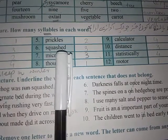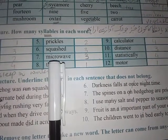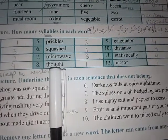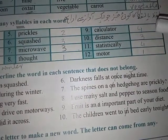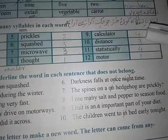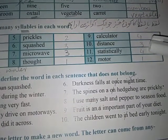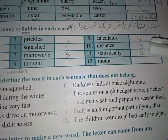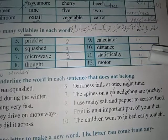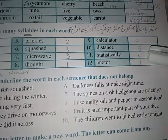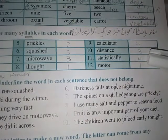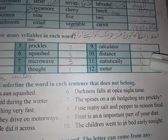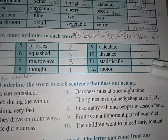Squashed — squashed: three-syllable word. Microwave: three-syllable word. Thought — simply thought: one-syllable word. Calculator: four-syllable word. Distance — distance: three-syllable word. Statistically — aap aaraam se padhe — how many syllables are there? Statistically: four-syllable word. Motor. Single, single, single — okay.